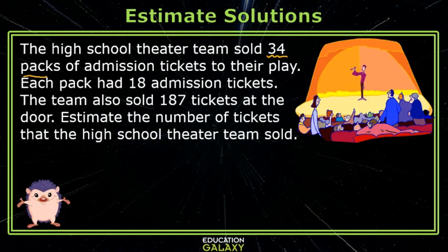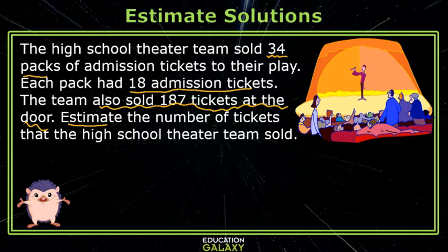The high school theater department sold 34 packs of admission tickets to their play. Each pack had 18 admission tickets. They also sold 187 tickets at the door. Estimate the number of tickets that the high school theater team sold. Let's think about the action here.